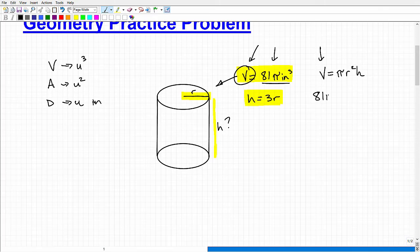So 81 pi is our volume. And I have pi on this side of the equation, but now I'm going to have to work on this R squared and this H. So my formula here or my relationship is saying my height is three times my radius.